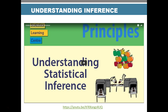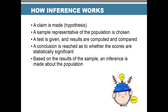What we do with inference is make a claim — which is our hypothesis — then we choose a sample, run a test, and compute our results. We compare them and then reach a conclusion about whether our results are statistically significant. Based on the results of the sample, we make an inference about the population from which it came.